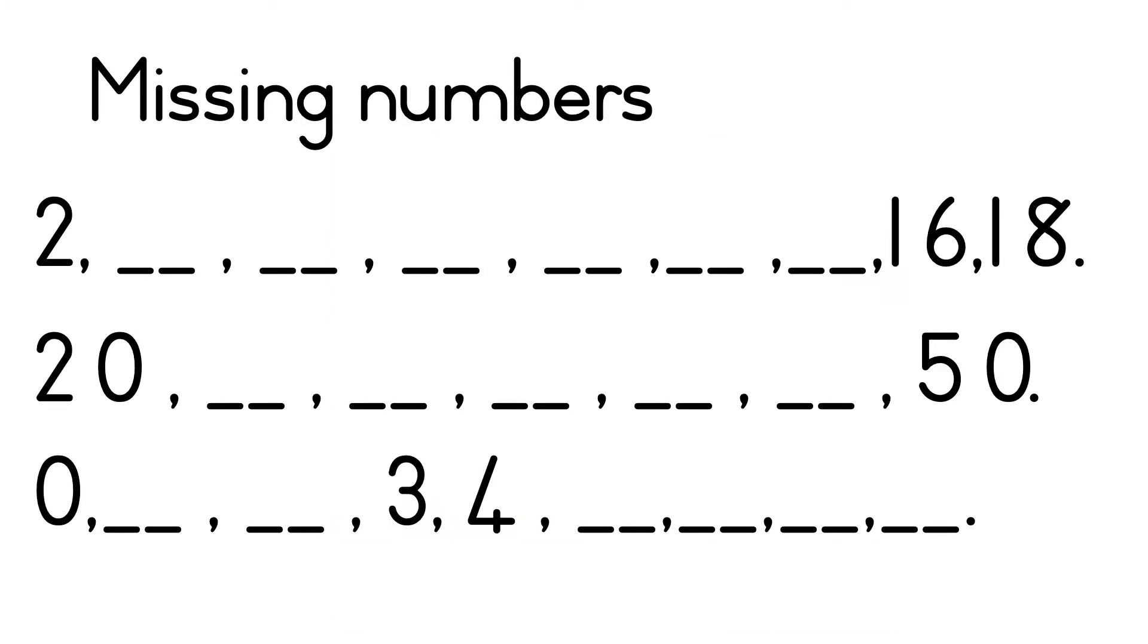Now on your whiteboard you are going to complete the number patterns for me. Everywhere where you see the two lines, remember there's a number missing. You are going to start at the top. Write two and then continue with your number pattern. First find out what we are counting in - is it in ones, twos, fives or tens? And then you can see if we are counting forward or backwards. Take some time with this one, pause the screen and complete those number patterns on your whiteboard.